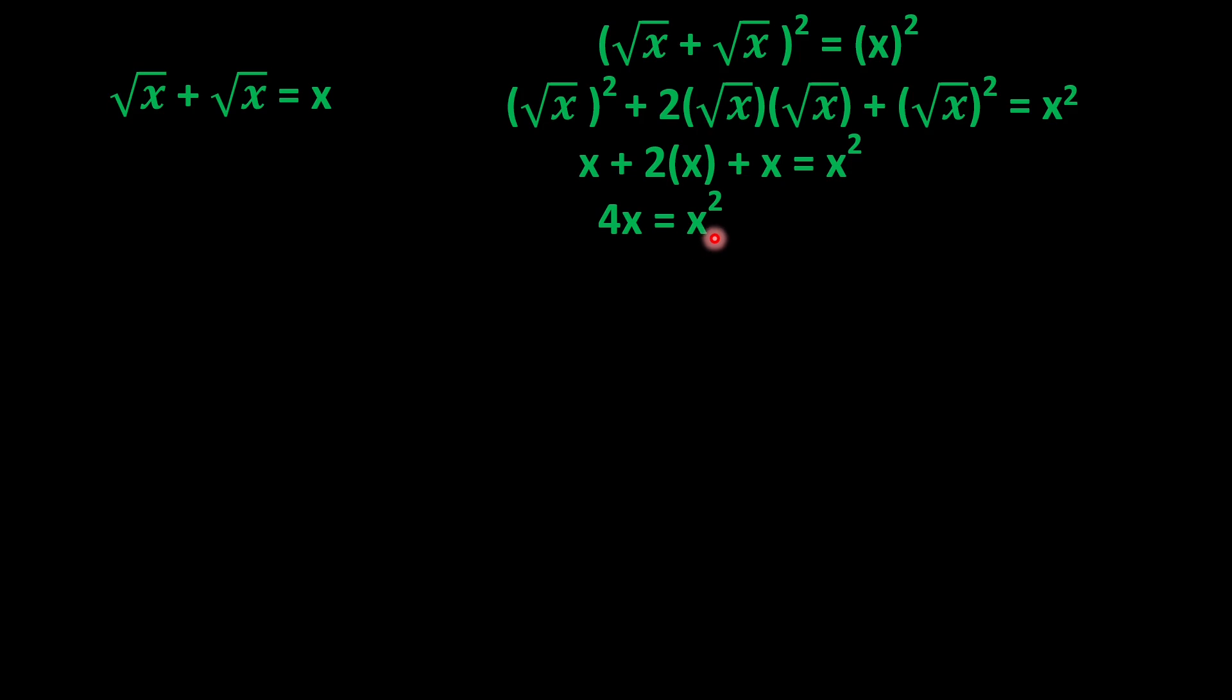But we could have done this another way. Let's add like terms. √x + √x becomes 2√x = x. Now squaring on both sides.